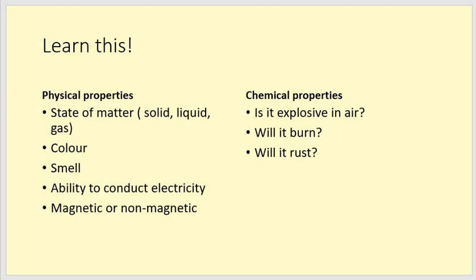Now, these are the differences between physical and chemical properties. And as it says at the top, you need to learn these. That probably means you need to pause the video here to write it down. So, physical properties are the state of matter. Is something a solid, a liquid or a gas at room temperature or during a practical? When it's heated, it might change. What is the colour of the substance? It could be - remember, this could be an element or a compound. Does it have a smell? Not always safe to test. Is it able to conduct electricity? Is it magnetic or is it not magnetic? These are all physical properties.